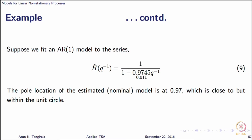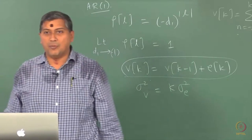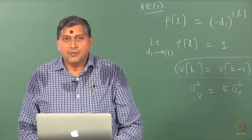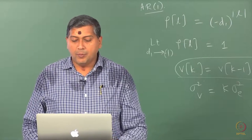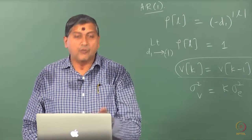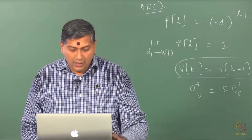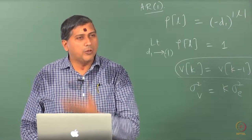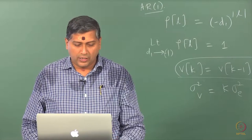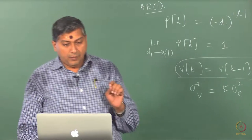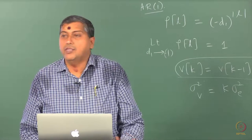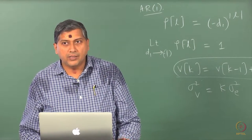One option is to build a model from the differenced series, or the other option is to fit an AR1 model. If you fit an AR1 model using any of the routines in R, the estimate I obtained gives a pole location at 0.9745 — roughly 0.97 — very close to the unit circle, but still stationary. The model identified is stationary.